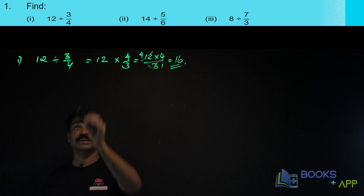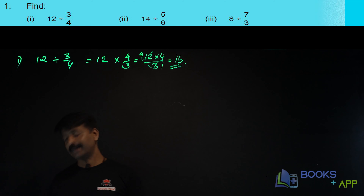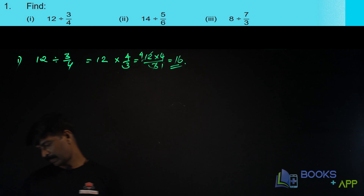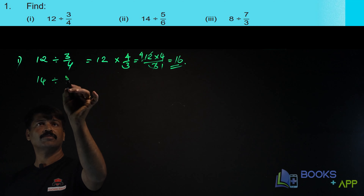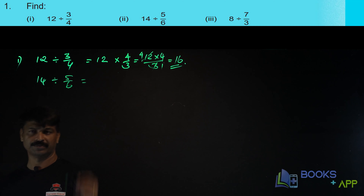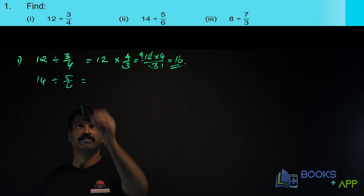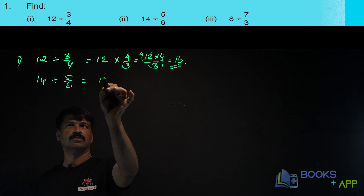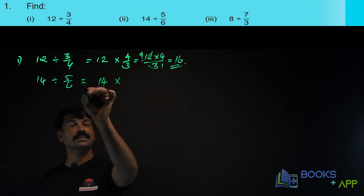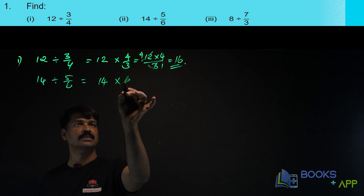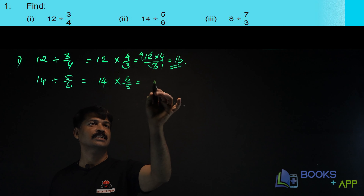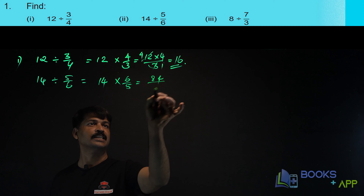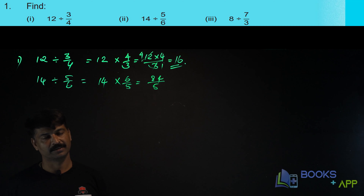That is, 12 divided by 3 by 4 equals 16. Now let us solve one more: 14 divided by 5 by 6. Division of a fraction — 14 into the reciprocal, which is 6 by 5. 6 fours are 24, 6 plus 2 is 8, so the answer is 84 by 5.